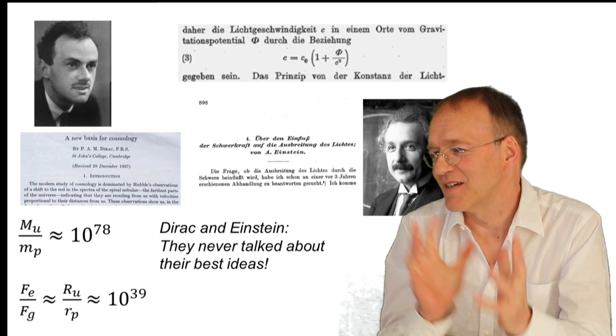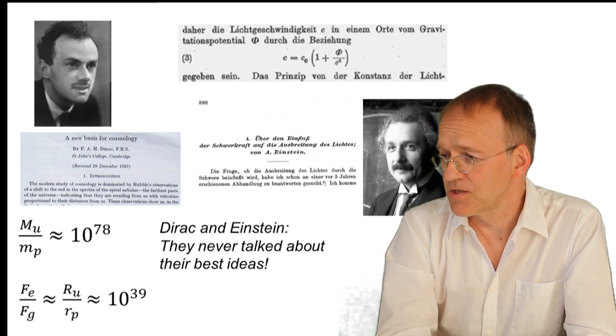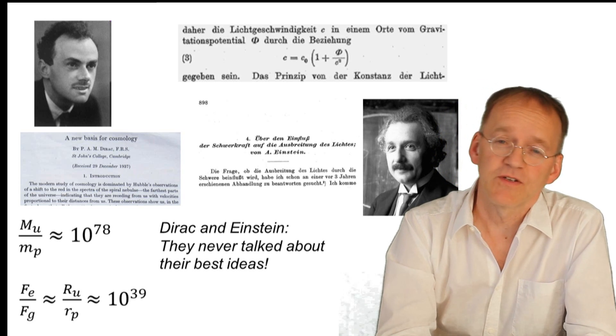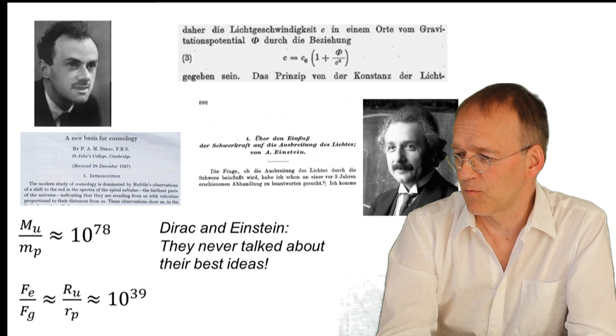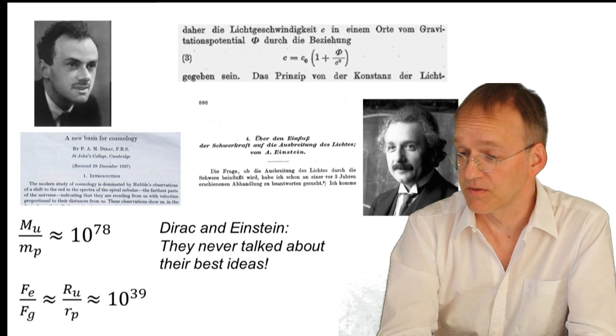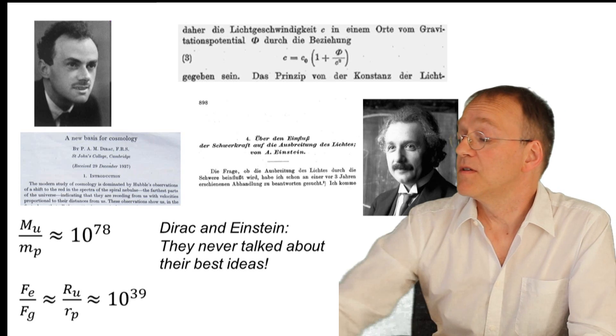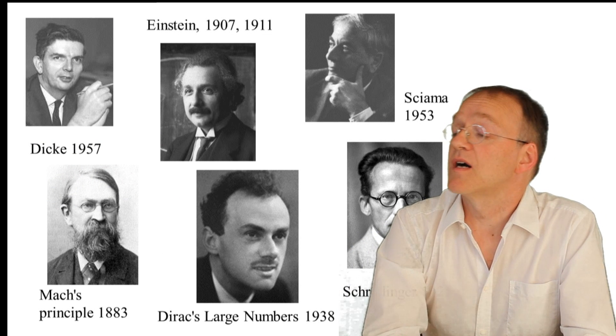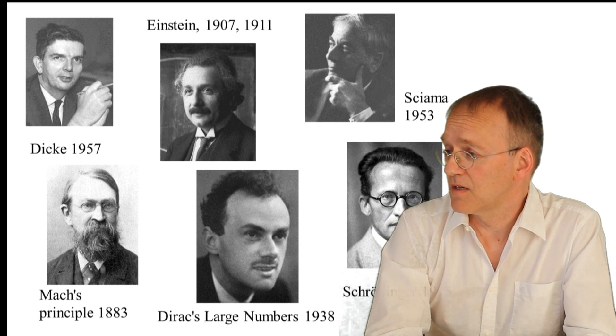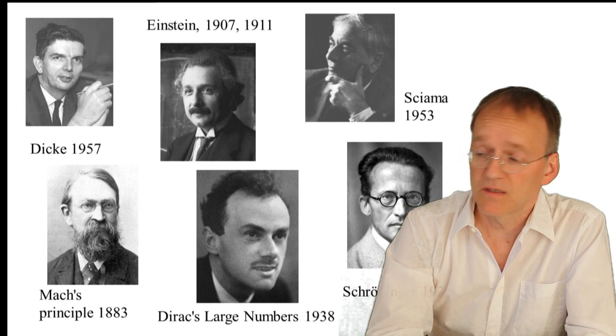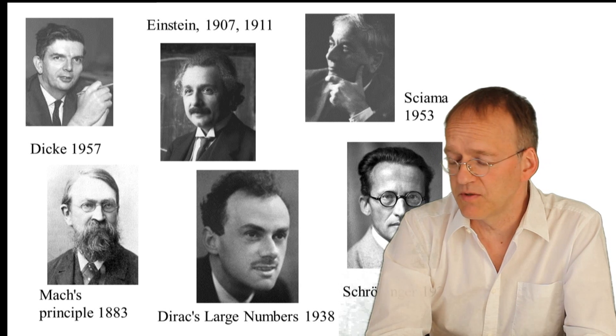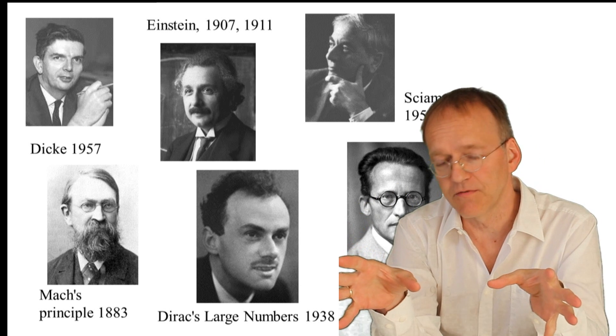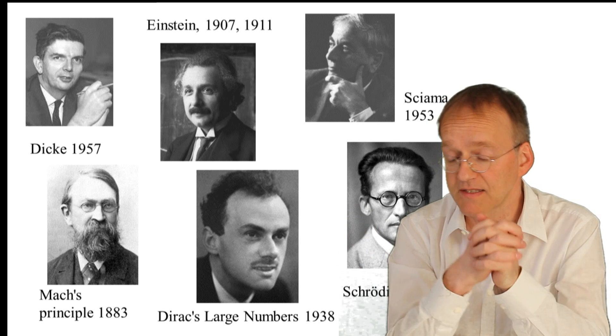And it's somehow tragic that Einstein and Dirac, they never talked about their best ideas. Which, I think Einstein's best idea is the variable speed of light formulation of general relativity, and Dirac's observation, cosmological observation of these large numbers, I think it's one of the most important contributions to physics. Well, to conclude, it's not only these two guys, but also Ernst Mach I mentioned, but I did not mention Dennis Sciama, Erwin Schrödinger and Robert Dicke in particular, who also contributed to this idea of variable speed of light that very well fits into Dirac's hypothesis.